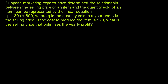Suppose marketing experts have determined the relationship between the selling price of an item and the quantity sold can be represented by the linear equation q = -30s + 800, where q is the quantity sold in a year and s is the selling price. That makes sense: if our selling price is higher, this whole thing becomes more negative and we sell less. If we lower our price, we sell more.